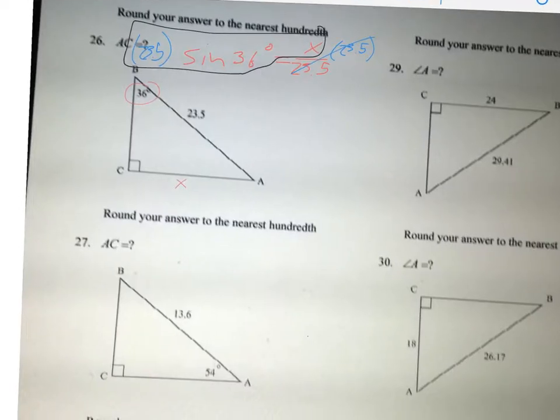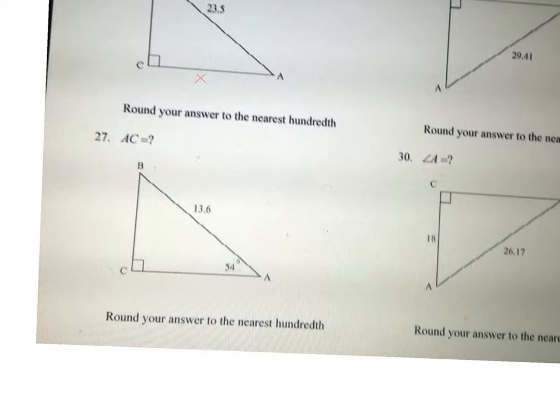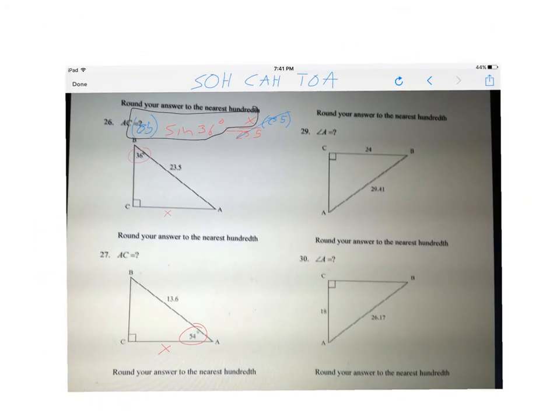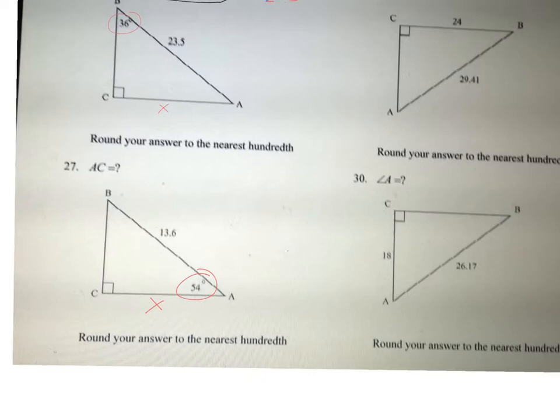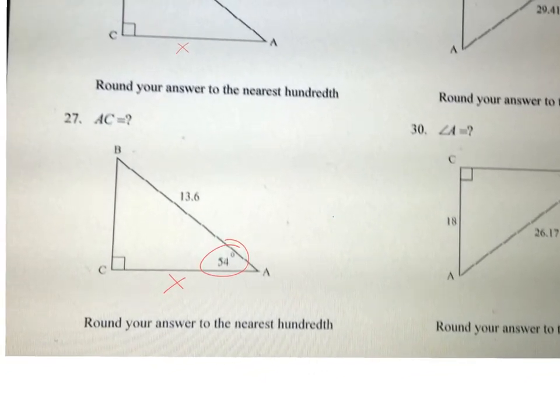Okay, AC, AC again is X. Now my reference angle is down here. So this is the adjacent, and this is the hypotenuse. Well, the adjacent and the hypotenuse, that's cosine, right? Adjacent hypotenuse. So same idea, I'm going to set it up.